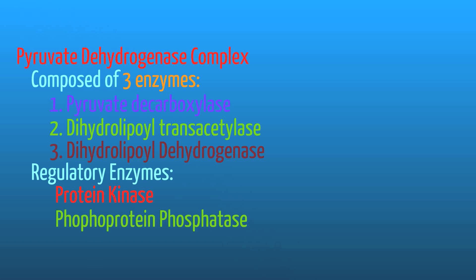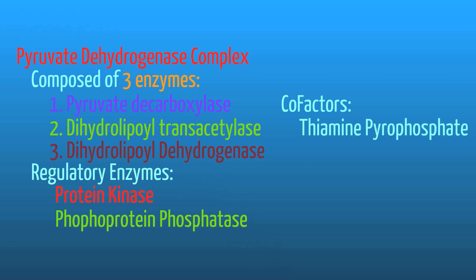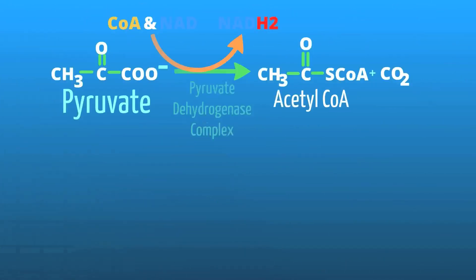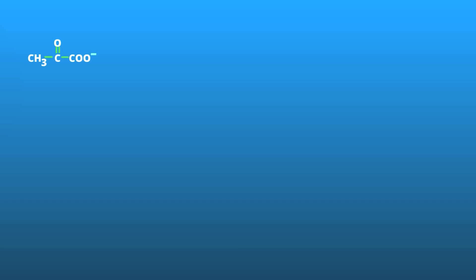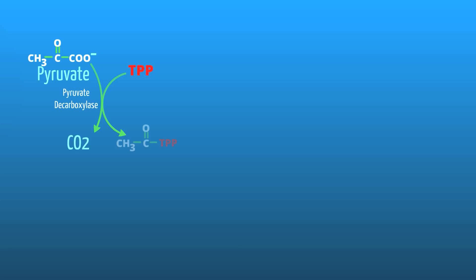Co-factors are needed for this complex to run, and these include thiamine pyrophosphate, otherwise known as TPP, and lipoic acid. A pyruvate attaches to the pyruvate dehydrogenase complex. The first enzyme that acts is a decarboxylase, which removes a carboxyl group and releases it as CO2 or carbon dioxide. At the same time, the cofactor thiamine pyrophosphate attaches to the decarboxylated pyruvate.